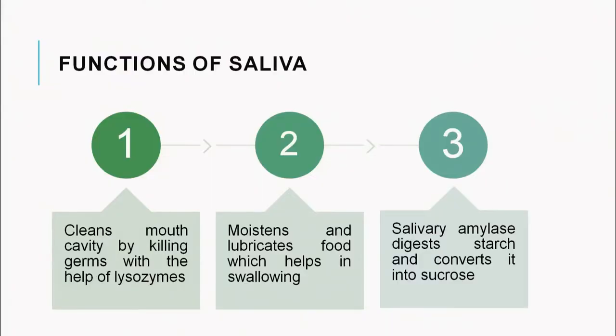What are the functions of saliva? Saliva cleans the mouth cavity by killing germs with the help of lysozymes. It also moistens and lubricates food to help in swallowing — without it we would not be able to swallow dry food. The salivary amylase enzyme digests starch and converts it into sucrose, a disaccharide. Starch is a polysaccharide — made up of many monosaccharide units joined together — and salivary amylase breaks it down into the smaller molecule sucrose.